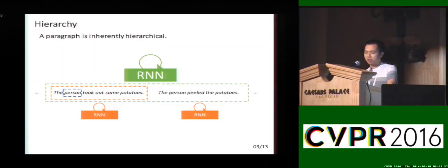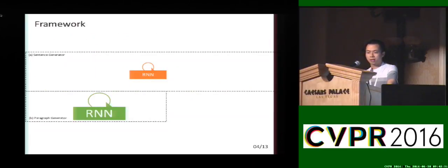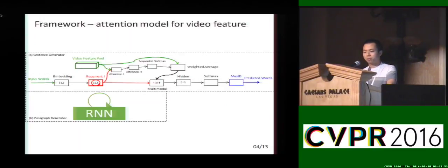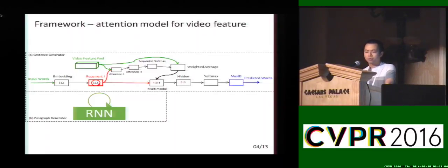By incorporating this hierarchical structure into our generation method, we have a framework with two components: the sentence generator and the paragraph generator. The sentence generator includes a language model that predicts the next word given the current word. In parallel, we have an attention model whose input is the video feature pool — a sequence of features extracted from video frames. The attention model uses the feature pool and the recurrent layer state to compute attention weights, which are then used to produce a weighted average feature that is input to the multi-modal layer together with the recurrent state.